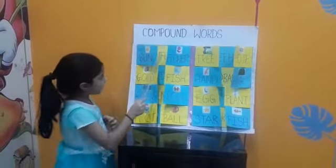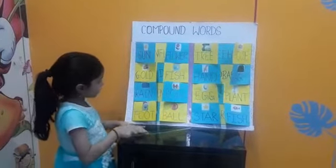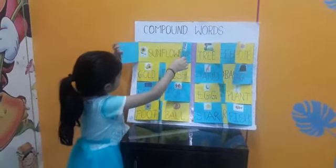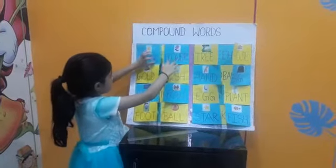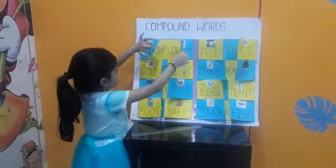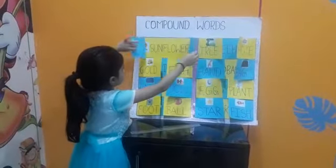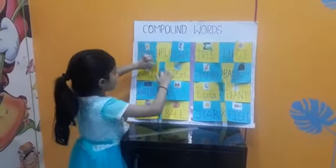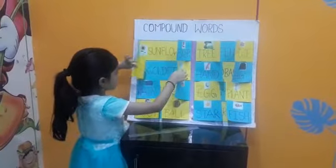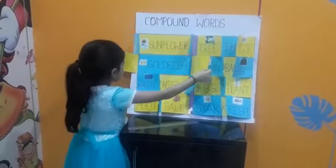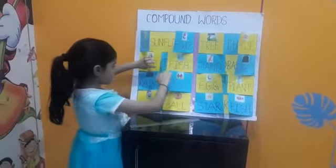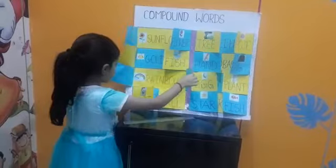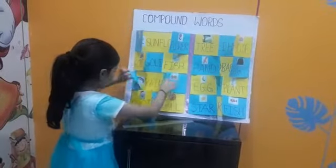Example: Sun plus flower — Sunflower. Gold plus fish — Goldfish. Rain plus bow — Rainbow.